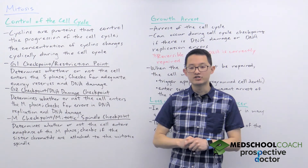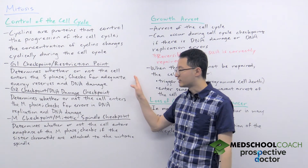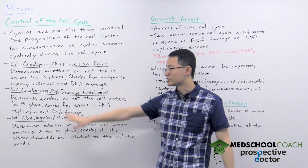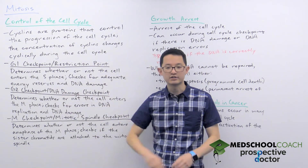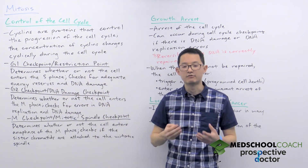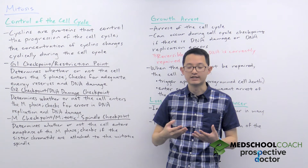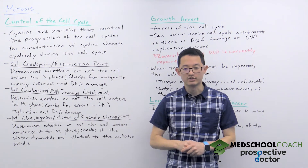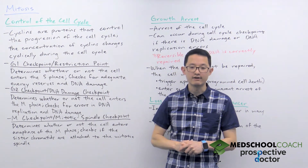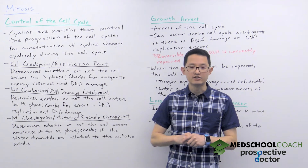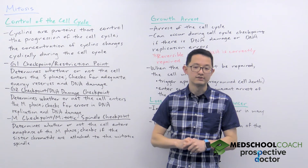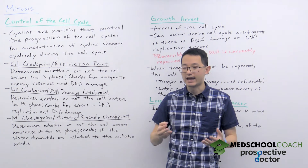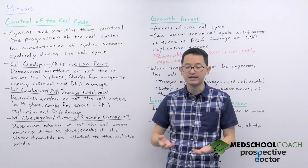What the G1 checkpoint is checking for is adequate energy reserves and DNA damage. Energy reserves are important because DNA replication is a very energy expensive process, and DNA damage is important because if the cell has DNA damage then it doesn't want to divide to form identical daughter cells that have the damage.